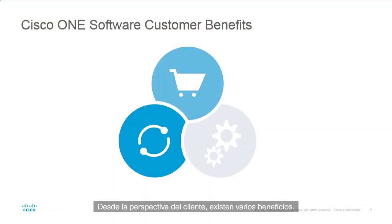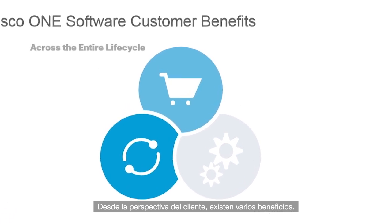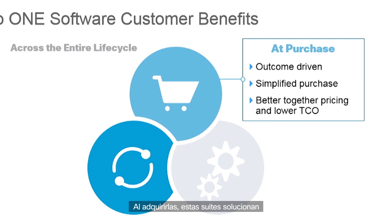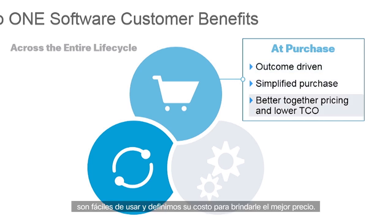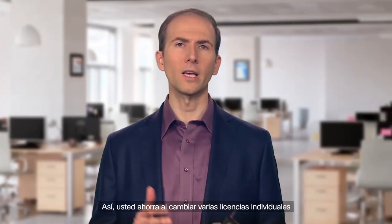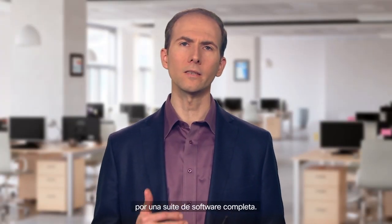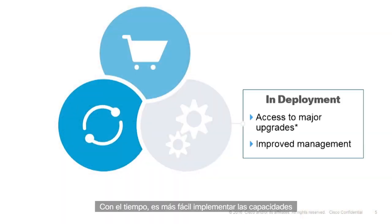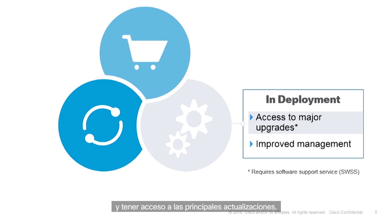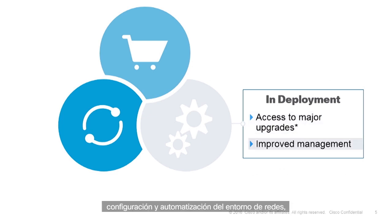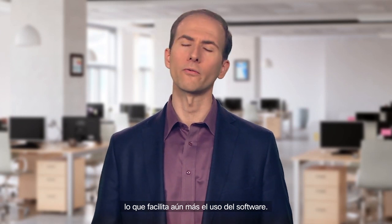When you think about this from a customer perspective, there's a range of benefits across the customer lifecycle. When you first make that purchase, these suites are outcome-based on the most relevant use cases. They're very simple, and the pricing gives you better-together pricing — so you save money by moving from buying individual licenses to a full software suite. Over time, as you deploy the capabilities, it's easier to do. You get access to major upgrades added into the software suite, and Cisco's innovation in improved management, configuration, and automation makes it easier to use the software over time as well.